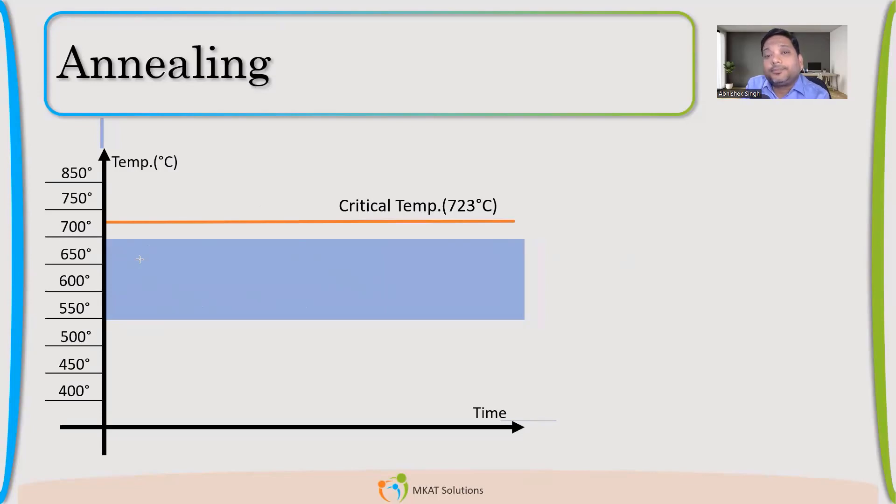The crystal formation starts happening. Based on time, it will keep on happening across the thickness. So this is the zone, the blue color which you see is the recrystallization temperature. Once we go to critical temperature, then the material becomes, it changes its nature.